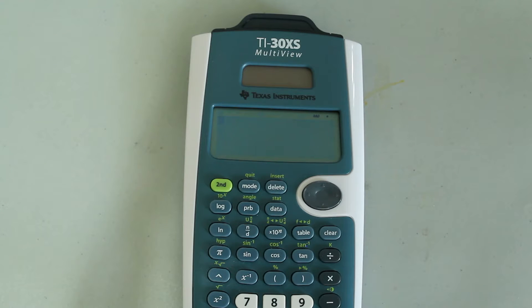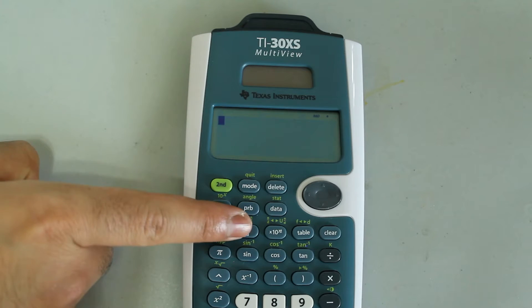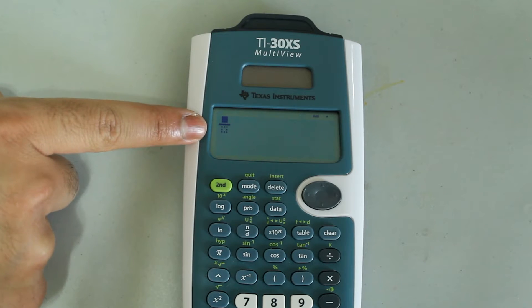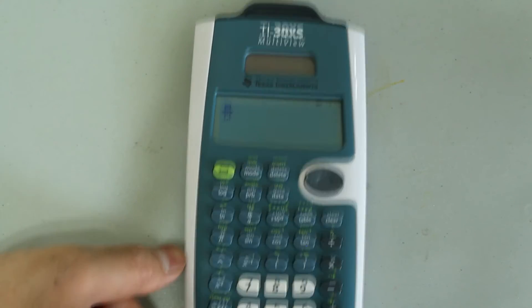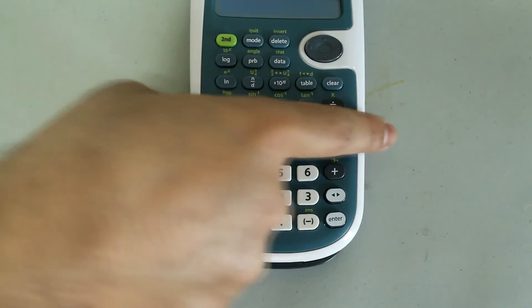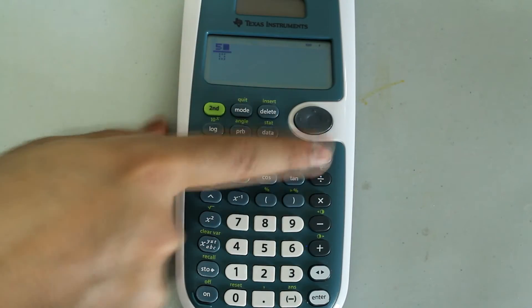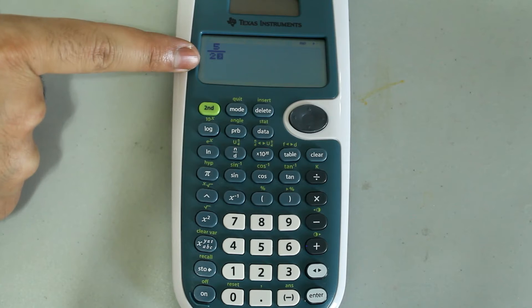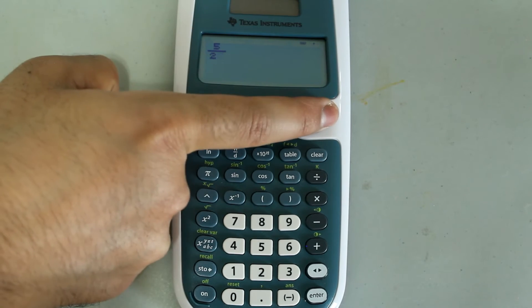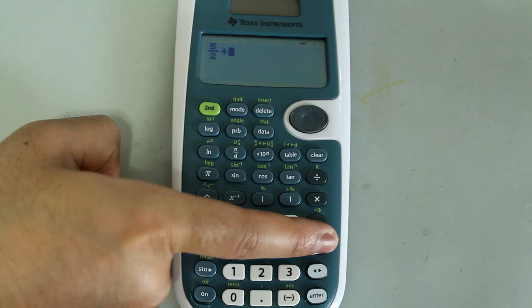First, let's add 5 halves to 2 thirds. In order to enter a fraction input, press the button labeled N over D, and that brings up the fraction form with a space for a numerator and a denominator. So I'm going to type in 5 in the numerator, so type in 5 on the number pad, and then press the down arrow and type in 2 in the denominator. And now I have 5 in the numerator and 2 in the denominator, so arrow right and press the plus sign.